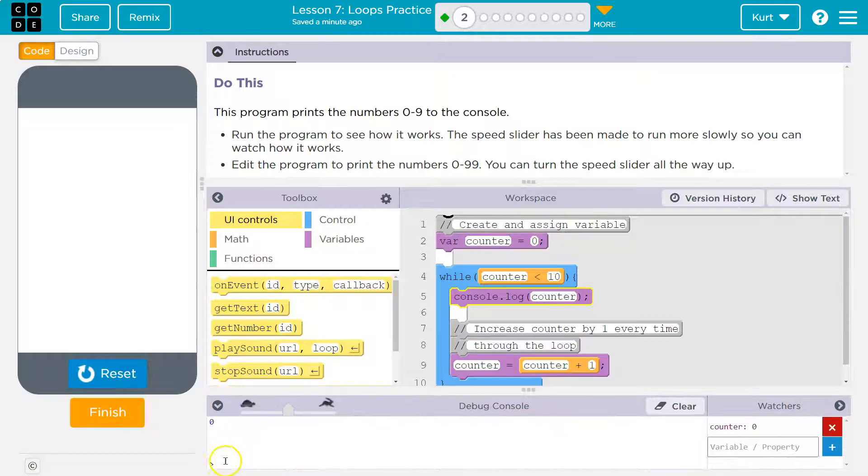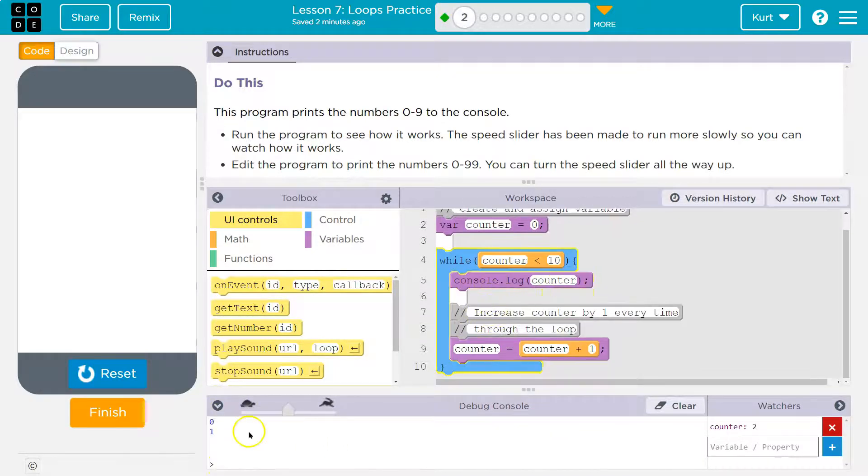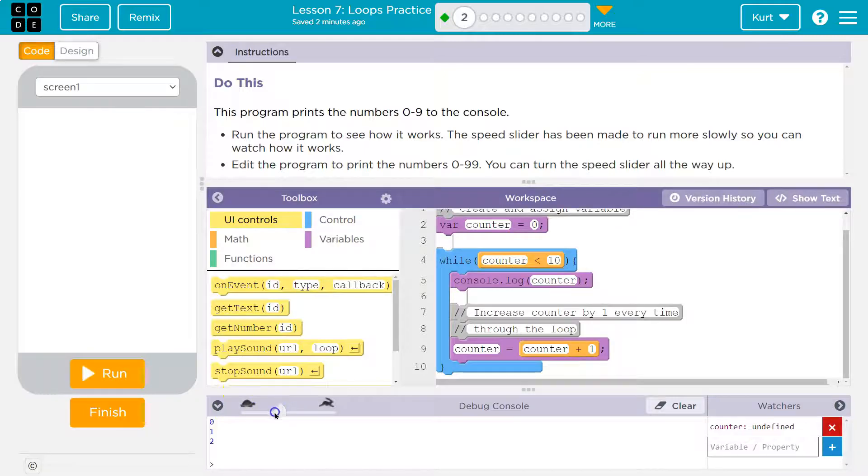Remember, this is the debug console down here. Run. I'm not seeing it. Oh, so this is the speed that thing's running. Let's watch this loop. I'm going to slow this down.